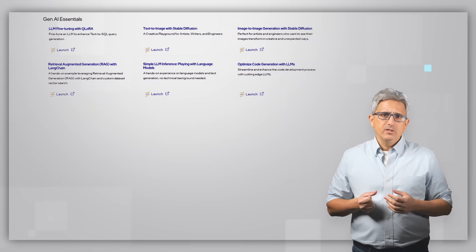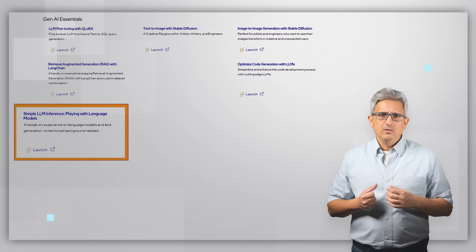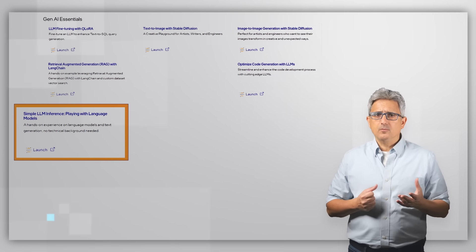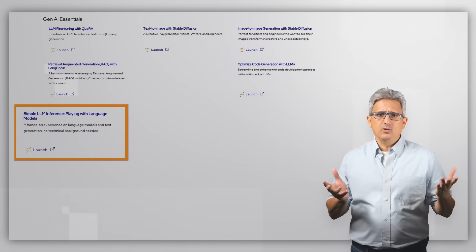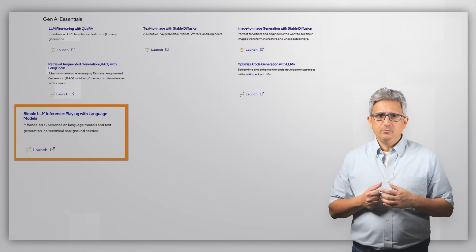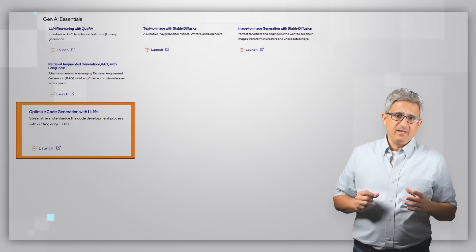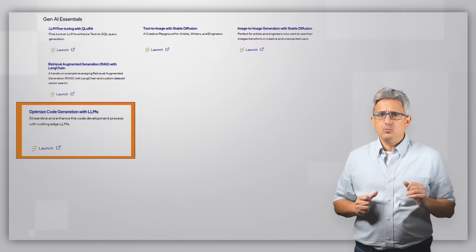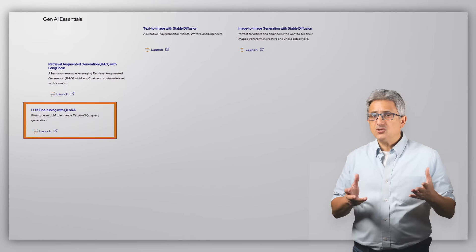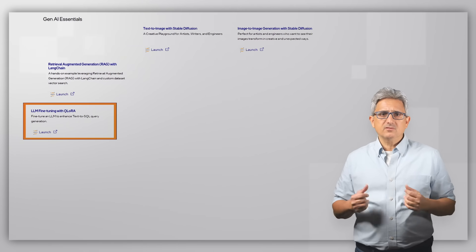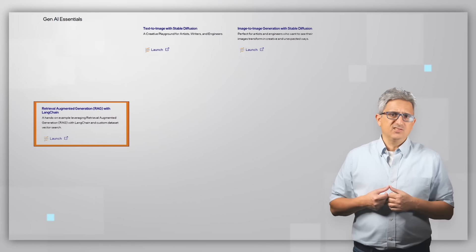If you are into language models, you can start by just playing around with a large language model. There are several models to choose from, up to 7 billion parameters, and they run with no problems on the latest Intel GPUs. You can try out the coding assistant provided by various versions of the CodeLlama model, fine-tune a large model using quantization and low rank adapters, or use retrieval augmented generation for multiple usages.